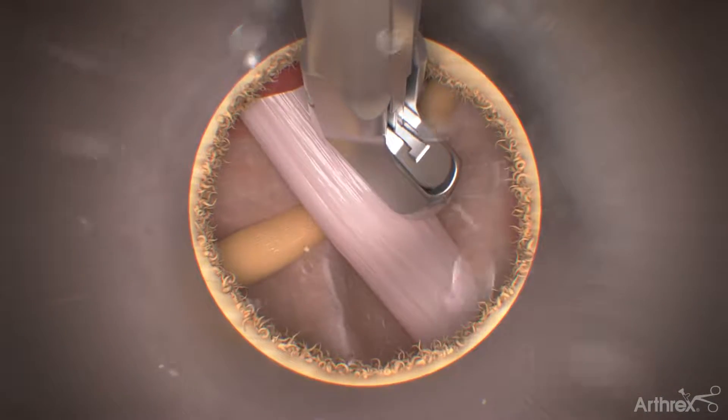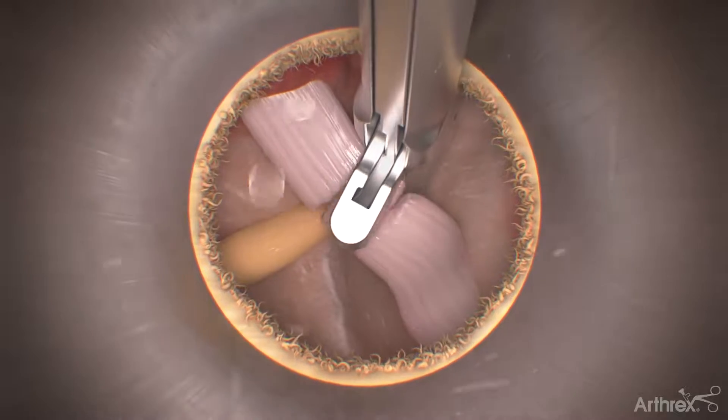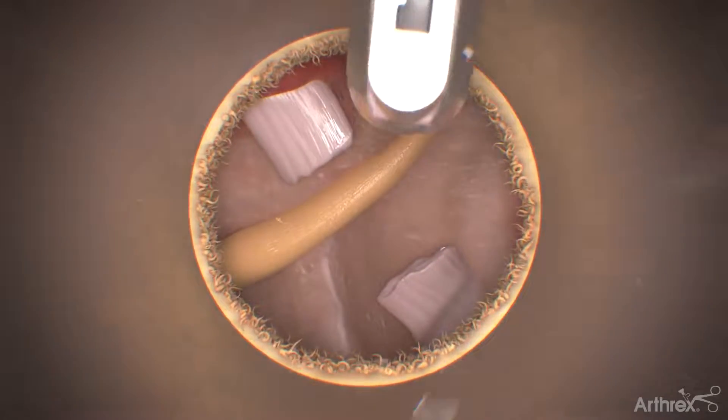After exposing the mammillary accessory ligament, cut the mouth with a punch or hook scissors to expose the nerve.